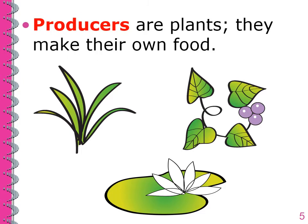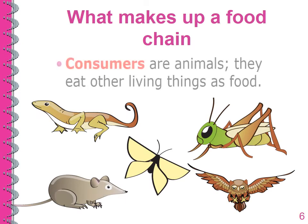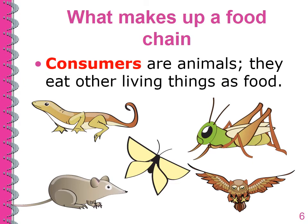Producers are plants. They make up their own food. Consumers are animals. They eat other living things as food.